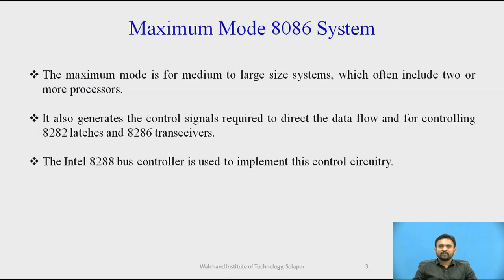The maximum mode is for medium to large size systems, which often includes two or more processors. There may be more than one processor in the system configuration, and the components in the system are the same as in the minimum mode system. Here the processor derives the status signals to control signals using the status information.